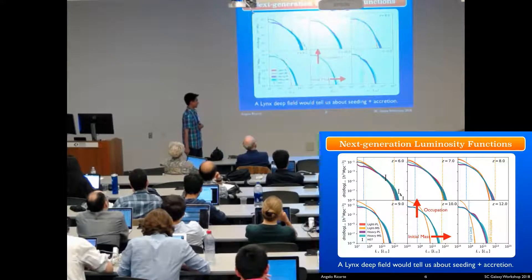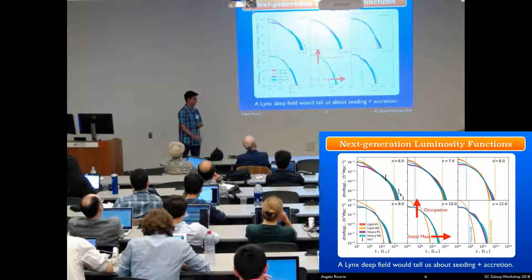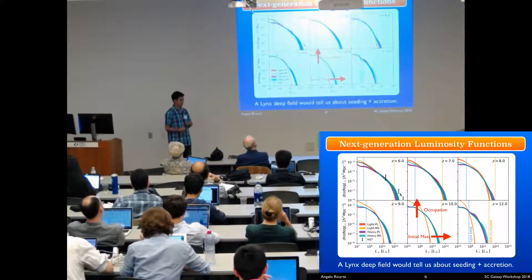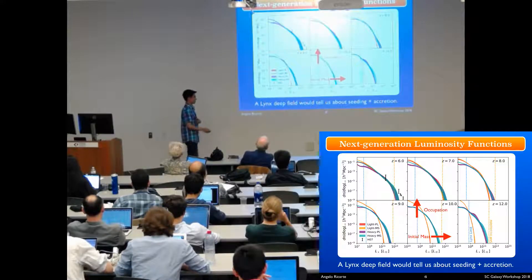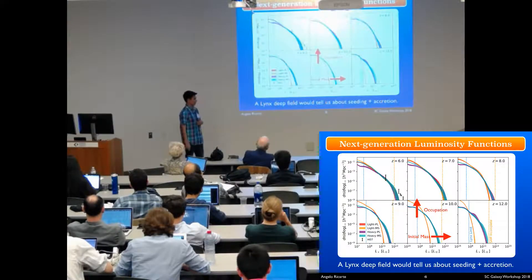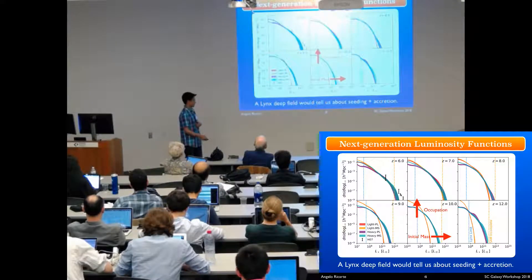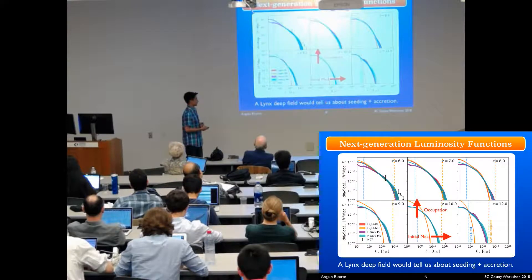One thing that is broken in the SAM, for example, is this occupation fraction, which ends up being related to the occupation fraction at redshift zero, since we set the seeding epoch to be much higher redshift than this, 15 or 20, based on when there are insufficient metals to prevent the formation of these seeds.